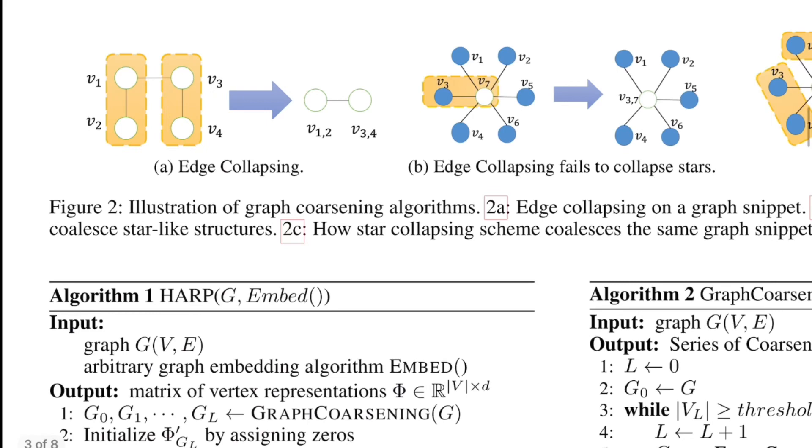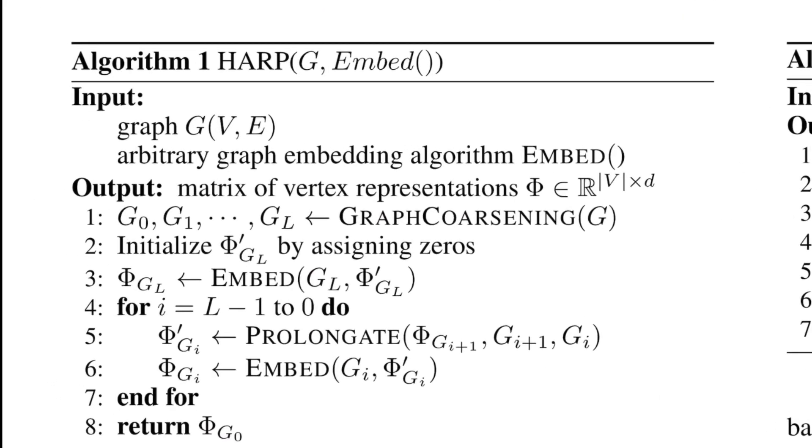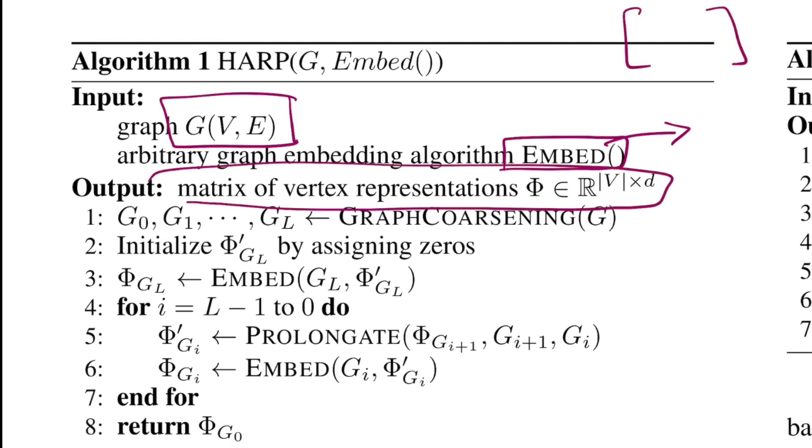Let's see the algorithm. We have graph G with V vertices and E edges, and we're given a function embed. Think of it as Node2vec or DeepWalk algorithm that will learn and output embeddings for every node in that graph. The output you want the HARP model to generate is function phi, which is a matrix with V nodes, and the dimension you want to represent every node is of D dimension.